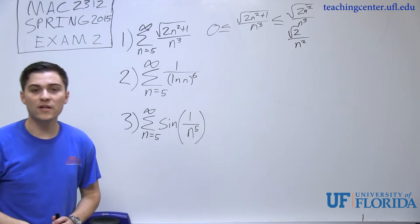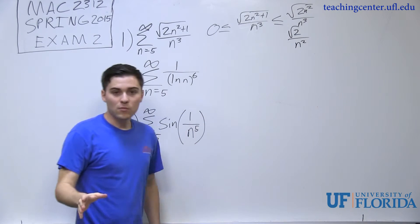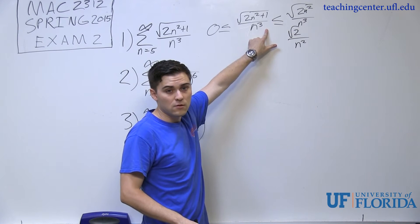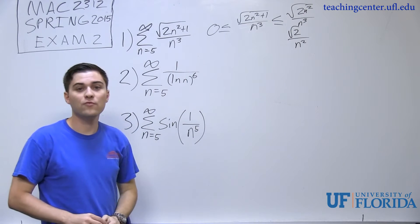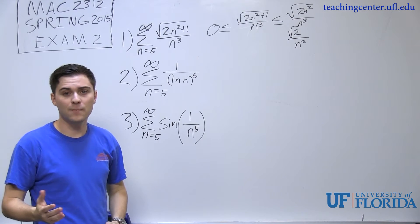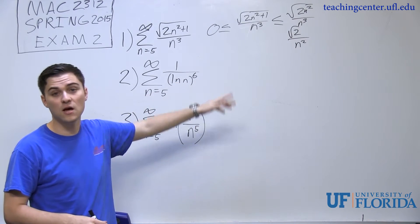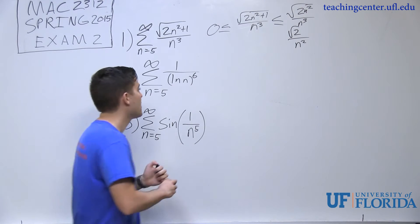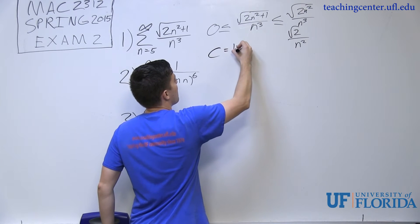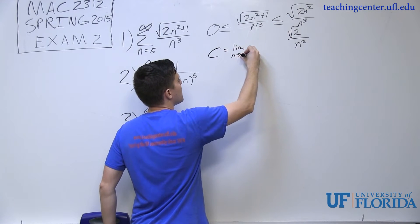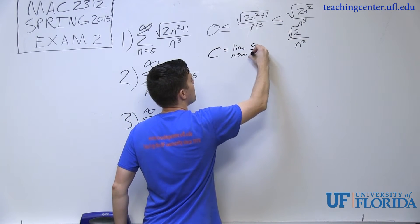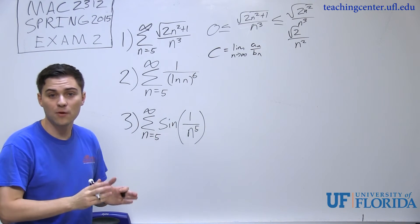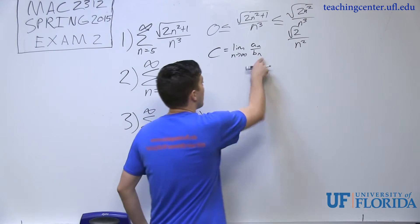There's a problem — √(2n²+1)/n³ is not necessarily less than or equal to √2/n², so I can't use direct comparison because that inequality doesn't hold. But I can still try limit comparison. Limit comparison says that if I take the limit as n → ∞ of a_n / b_n and get any finite positive constant, both series should either converge or both diverge.